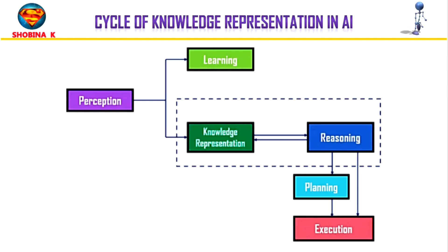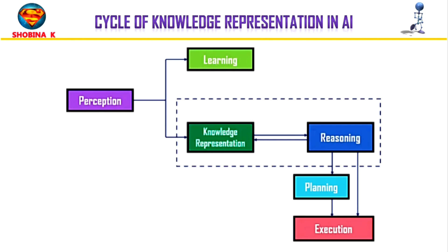Finally, we have planning and execution. These components depend on the analysis of knowledge representation and reasoning. Planning includes providing an initial state, finding preconditions and effects, and determining a sequence of actions to achieve a goal state. Once planning is completed, the final stage is execution of the entire process.